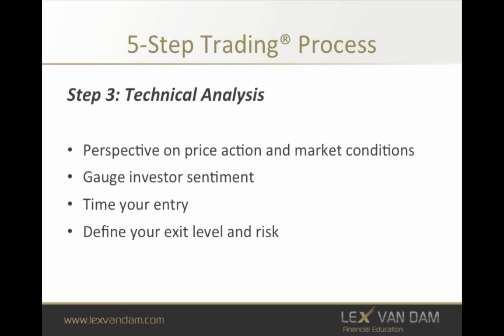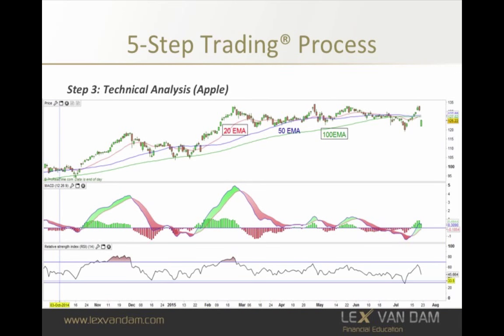Technical analysis helps us time our trades. We may have a stock on our watch list with all research done, but the time may not be right — it helps determine a good entry point and where we get out, so we have targets and can size positions accordingly. On the chart you can see exponential moving averages, and below that the MACD momentum oscillator, and beneath that the RSI which indicates overbought and oversold conditions by looking at price momentum.